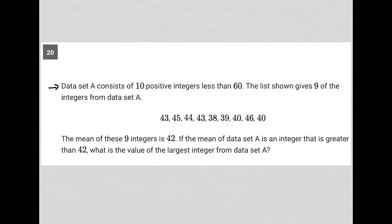This question says data set A consists of 10 positive integers less than 60. The list shown gives nine of the integers from data set A. Here are our nine integers. We know that there's one additional integer I'll call X, which would complete data set A. But for right now, we just have this first nine.